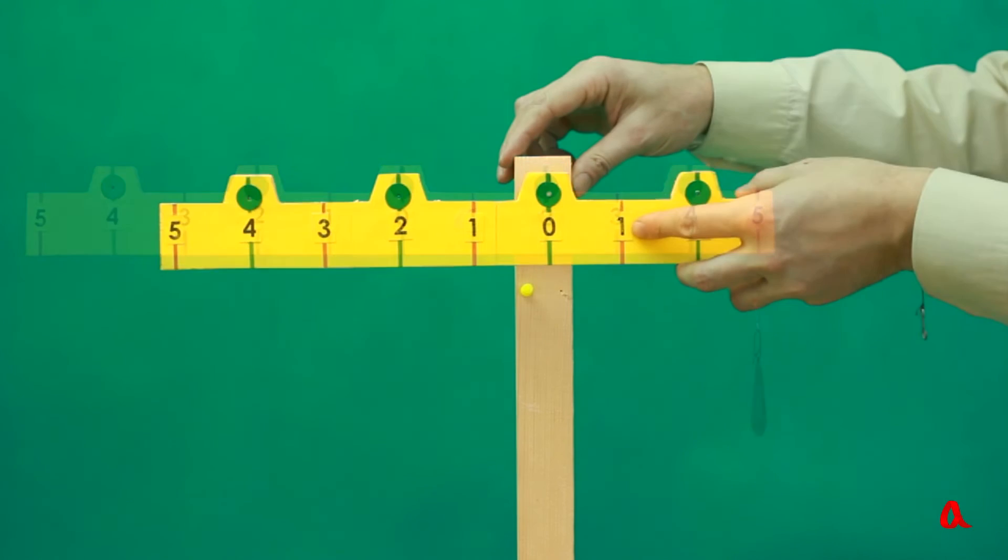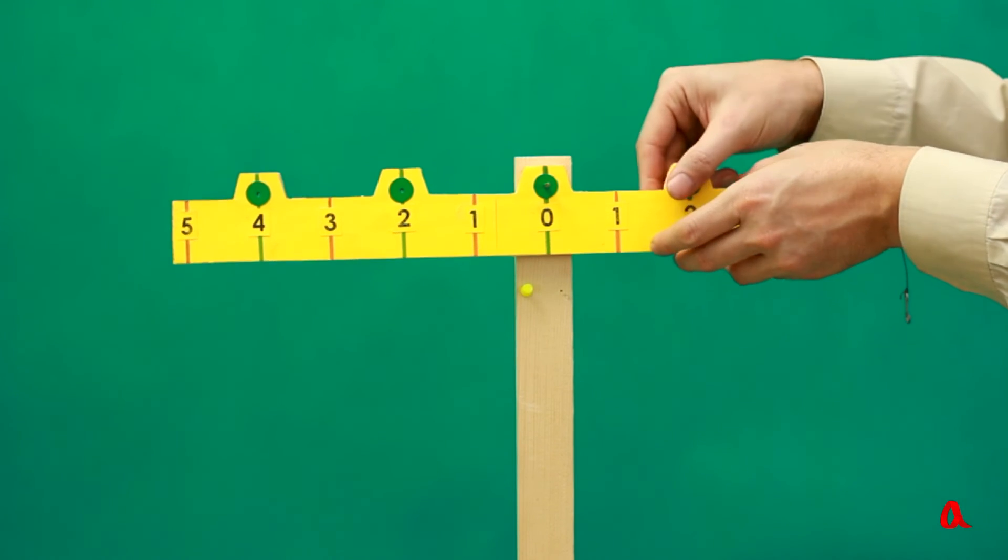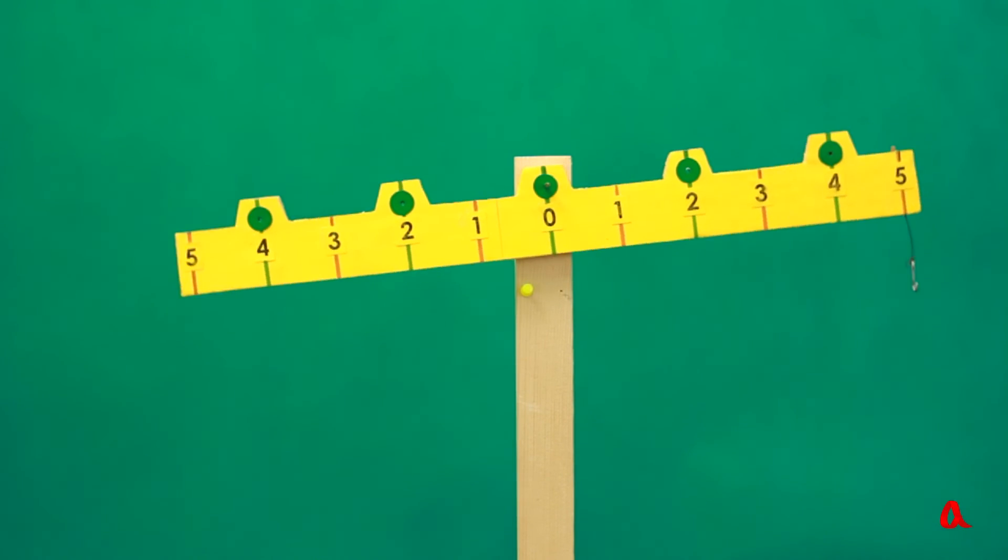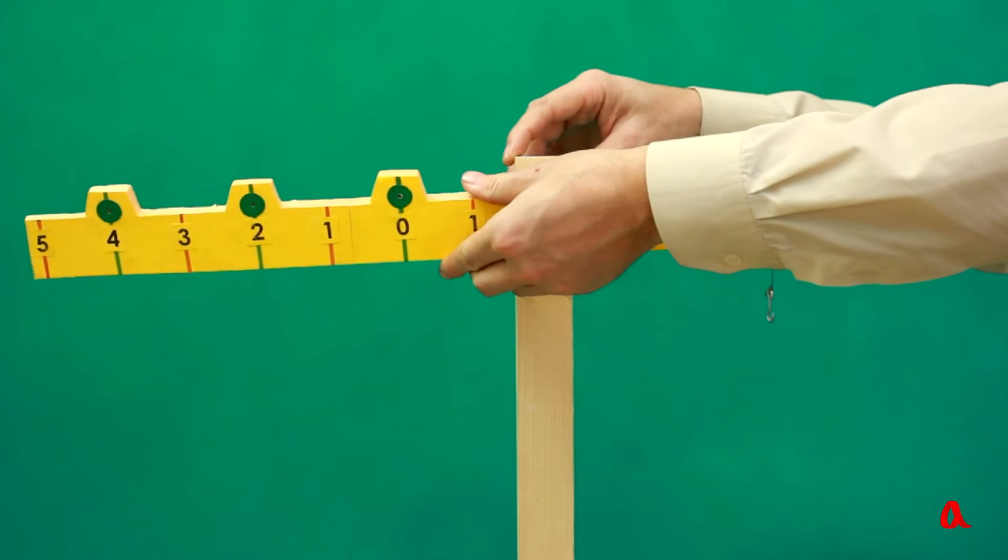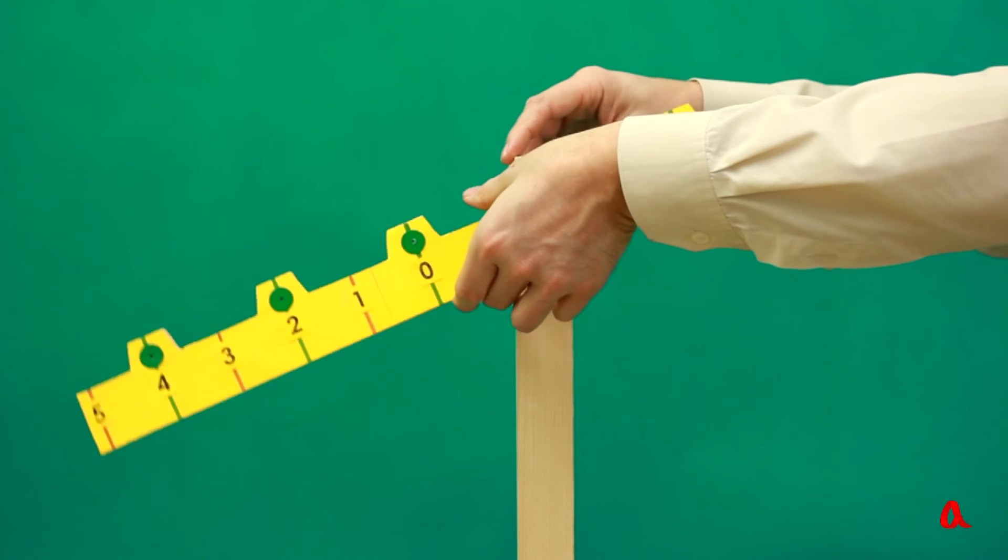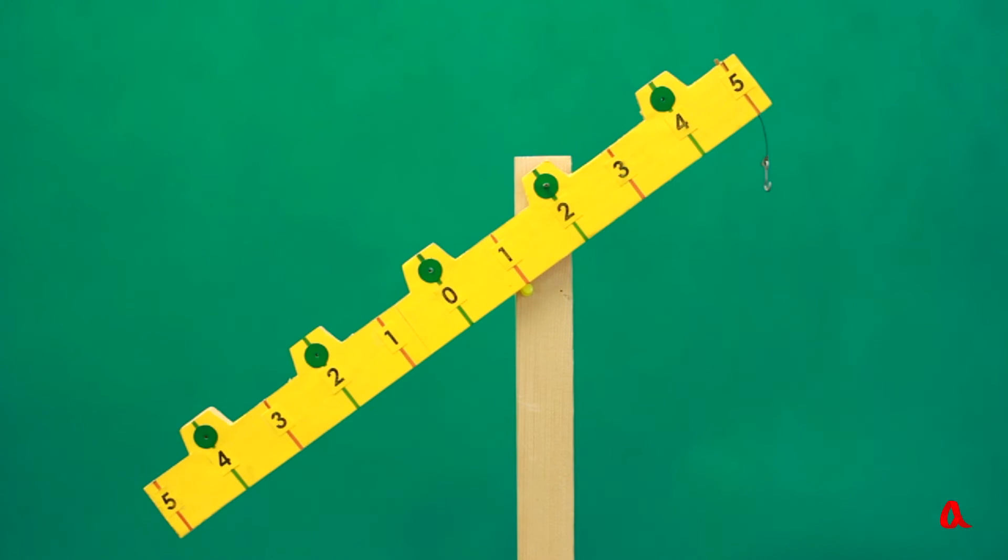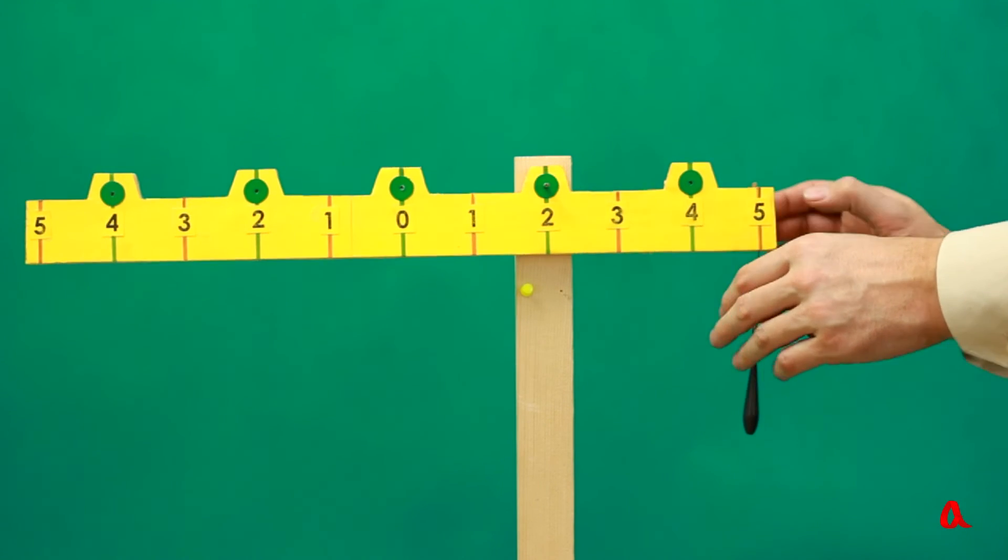We mustn't forget that the lever's beam also has some weight. When we suspended the beam by its central point, it was of course in equilibrium. When we do so by another point, its gravity center outweighs and moves downwards. To balance it up, we have to suspend a load on the other side.